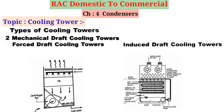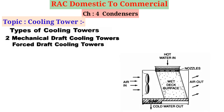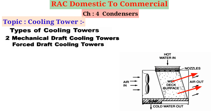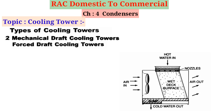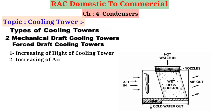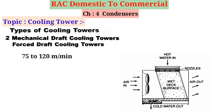In forced draft cooling towers, a fan forces the air through the tower. The warm water from the condenser is sprayed at the top of the tower through spray nozzles. Air is forced upward through the side near the bottom of the tower. The condenser warm water is cooled by evaporation as discussed earlier. The effectiveness may be improved by increasing the height of the tower, the area of water surface exposed to air, or the velocity of air. An air velocity of 75 to 120 m per minute is recommended, with a flow of 90 to 120 cubic meters per minute per ton of refrigeration capacity.